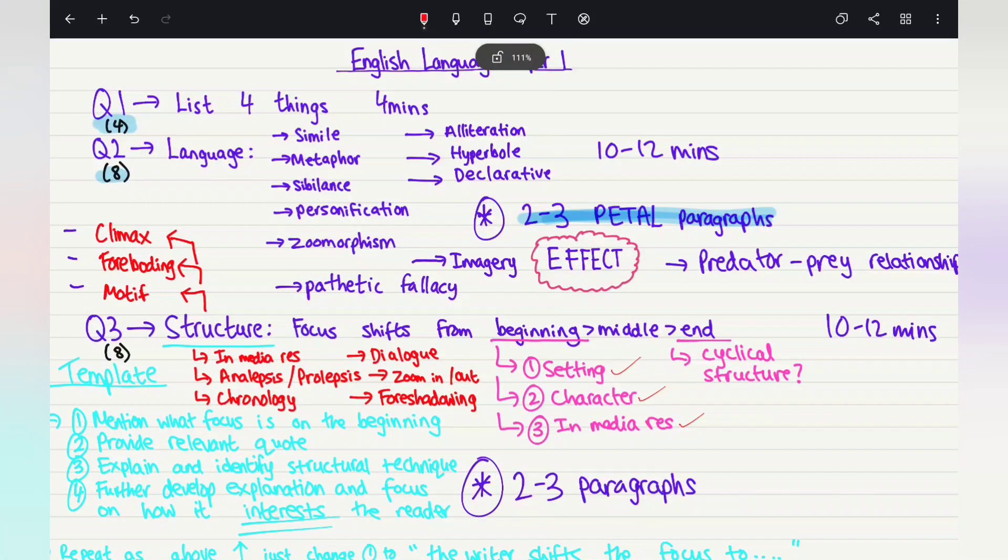So you can pick out at least two to three of these and use them to write your PETAL paragraphs. Some of you use PEAL, so point, evidence, explanation and link, or alternatively some of you use PETAL which is point, evidence, technique, analysis and link. It doesn't matter as long as you use one and you are correctly answering the question. That should score you the top marks. So make sure your analysis is in depth and detailed if you're aiming for eight out of eight, which you all should be.